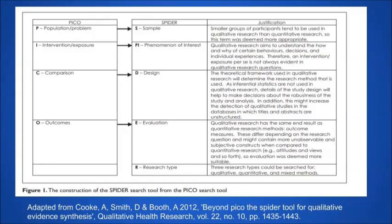Then comes the last component, R for Research Type. Research types, as we all know, can be qualitative. In the field of medicine, qualitative analysis is in great demand. Quantitative research — yes, we have experimental research studies — and mixed method studies are also present.